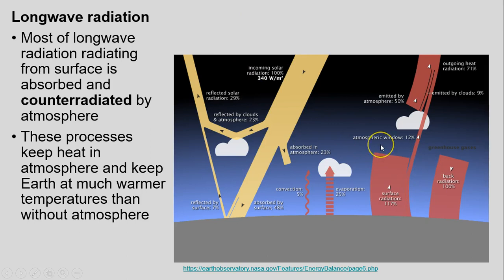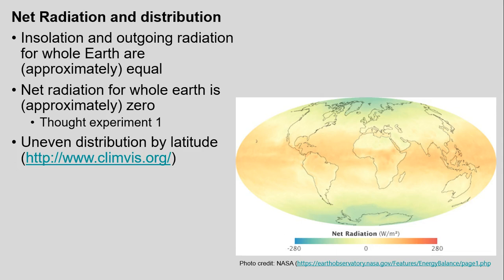Now that we've talked about at least some basics of incoming solar shortwave radiation and outgoing longwave radiation, we want to bring this back to the concept of net radiation. Coming back to this geography question of why does geographic distribution matter? If we were to have a thought experiment and just had incoming solar radiation without that same amount of outgoing longwave radiation, what would happen to the Earth? Conversely, if we had more outgoing radiation than was incoming from the sun, what would happen to our temperatures?